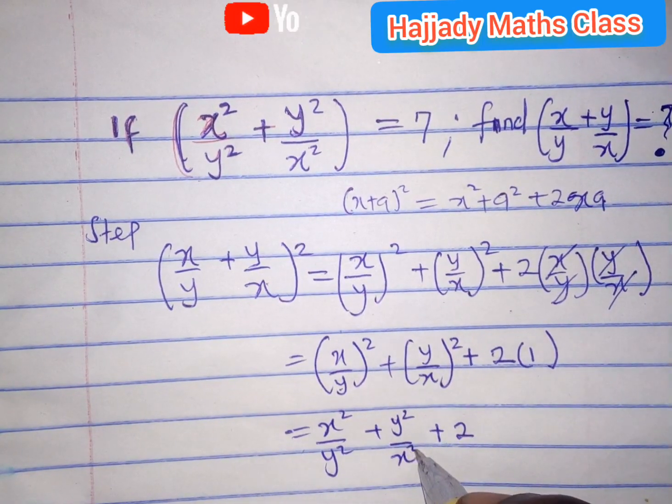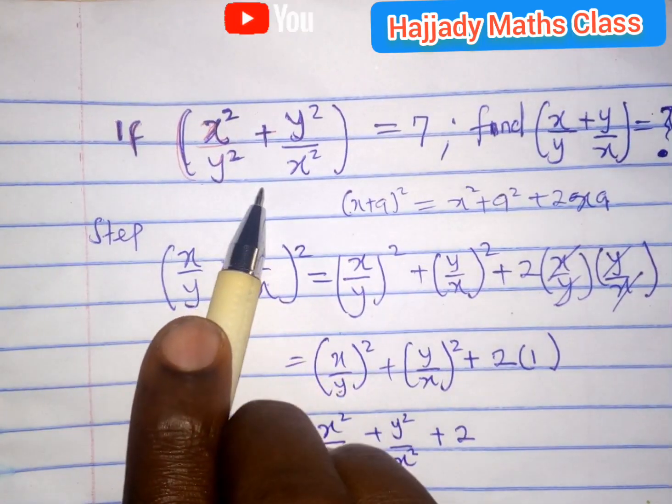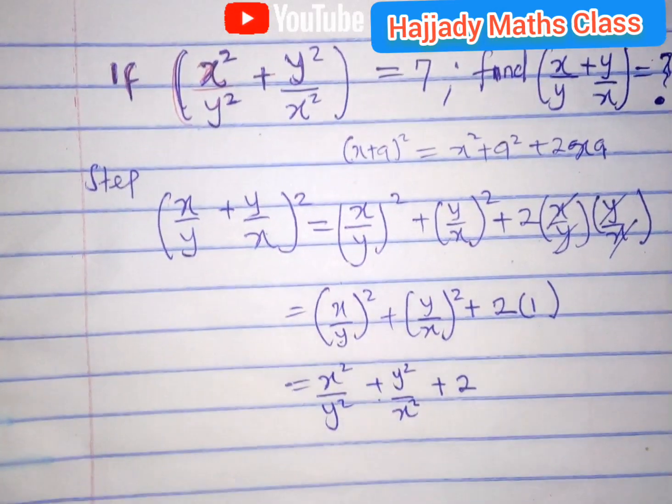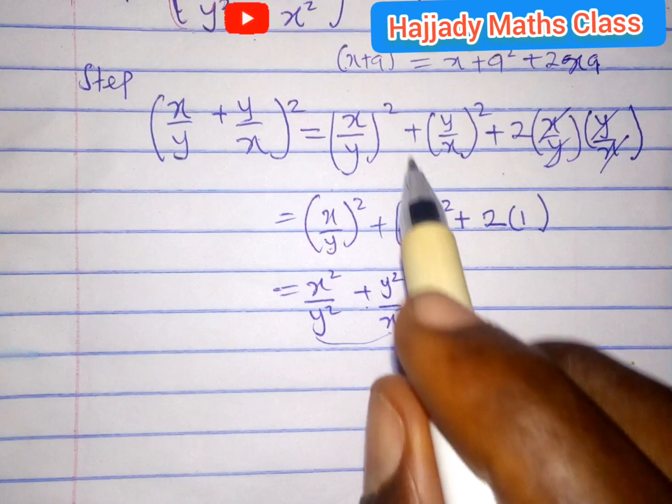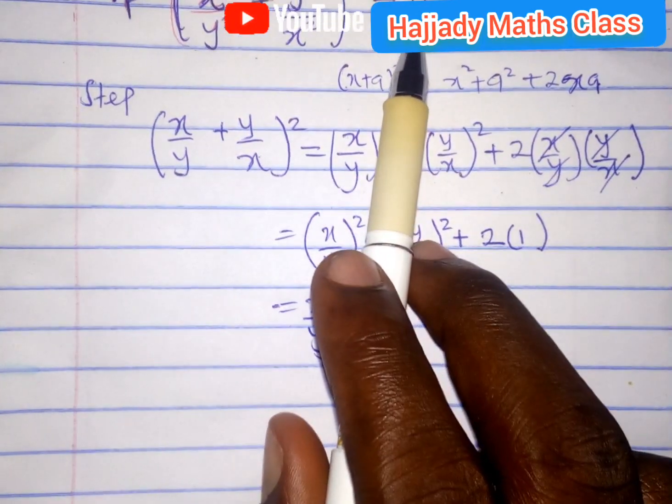Now, looking at this, this is the same as the first equation given to us up here. So mathematically speaking, you will agree with me that this is the same as 7 as given in the original equation.